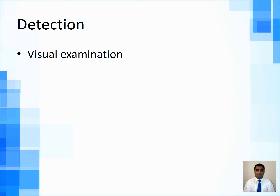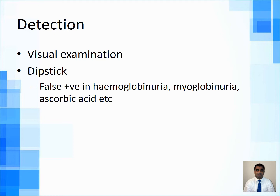Let's move on to detection of hematuria. Visual examination is extremely important — this is what brings a lot of patients to medical attention. By looking at the urine itself, you can gain a lot of information, so it is very important to note your findings on visual examination.